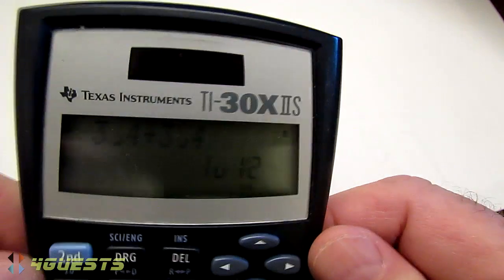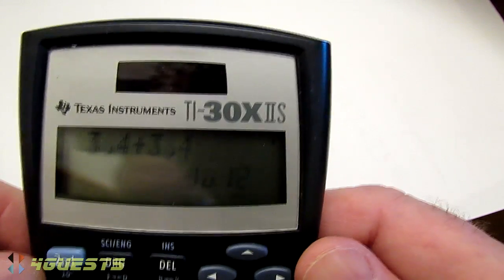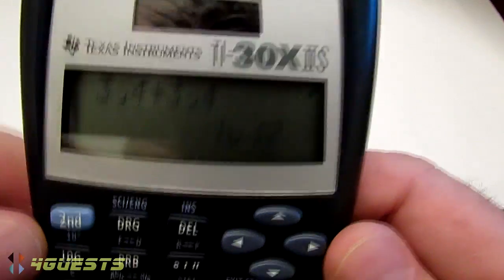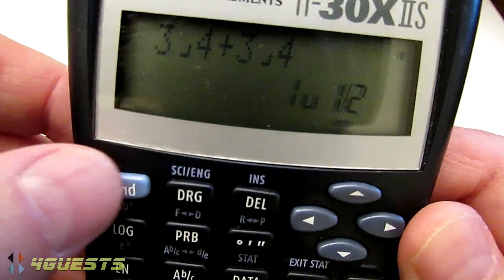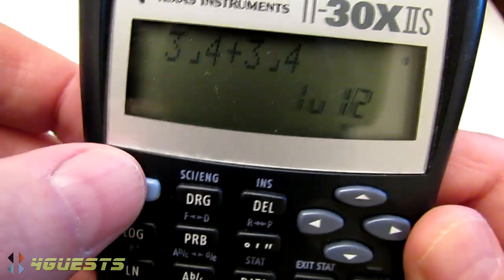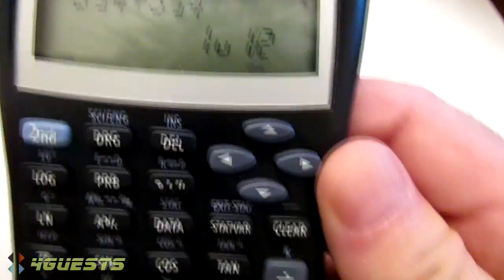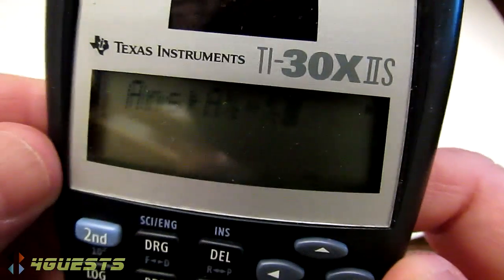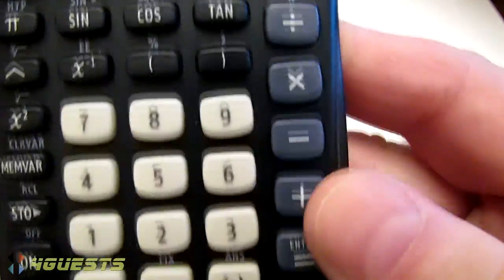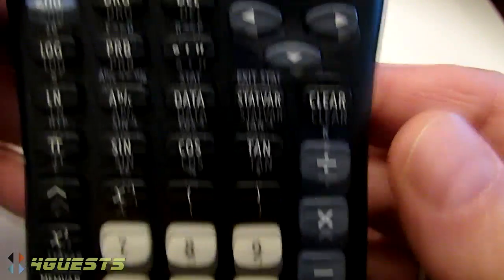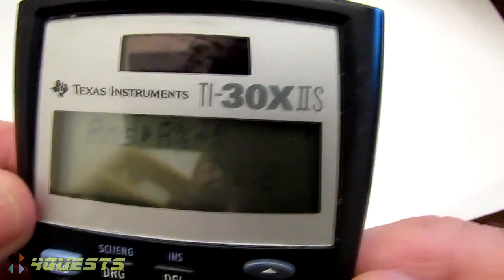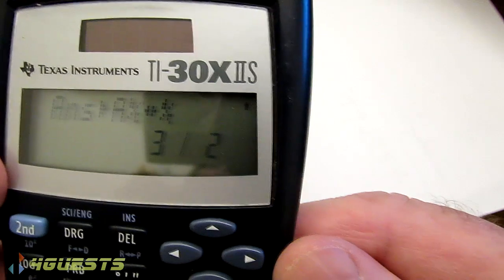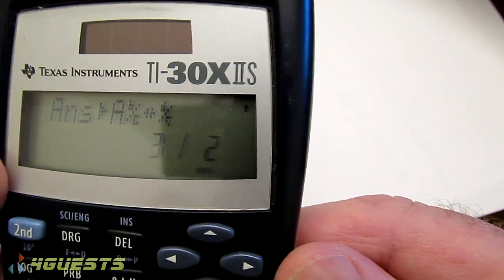Say we want the improper fraction form of this answer. We would hit the second button, the blue button up here in the corner, followed by the AB over C, which gives us that, and followed by the equal button, which would give us the improper fraction equivalent: 3 over 2.